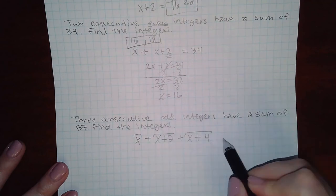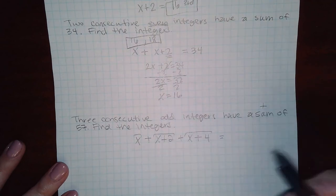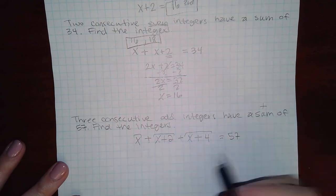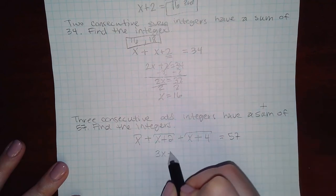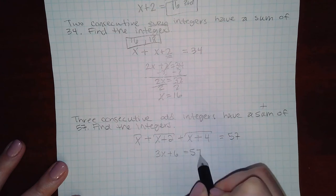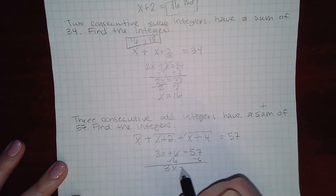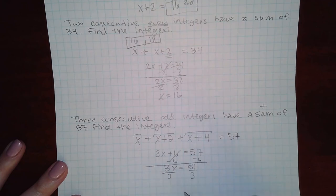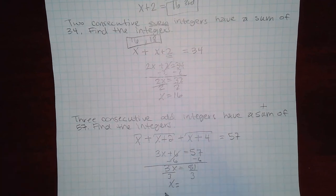And that sum means to add equals 57. So if we combine our like terms we get 3x plus 6 equal to 57, 3x equal to 51, x equal to 17.